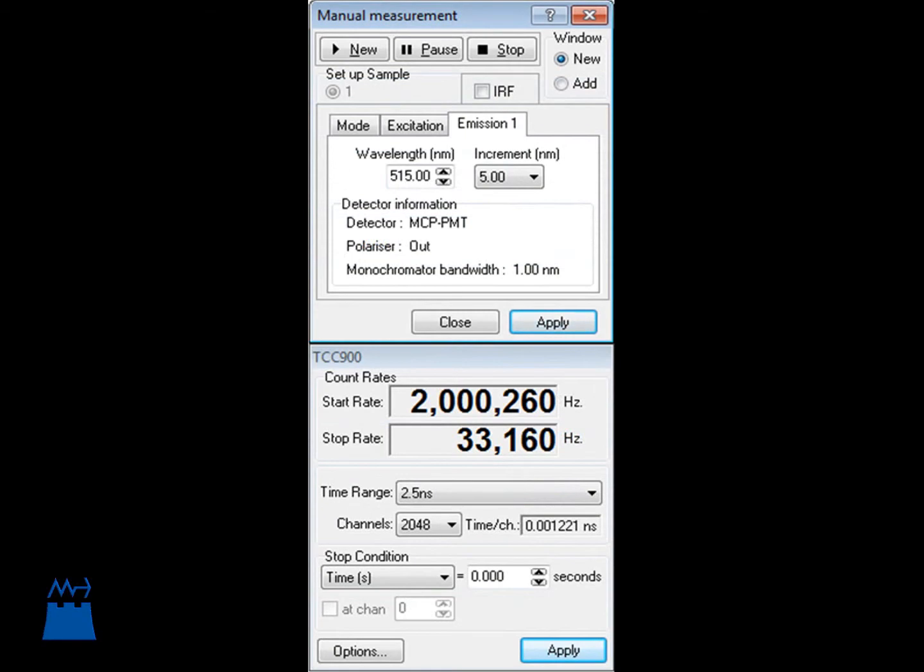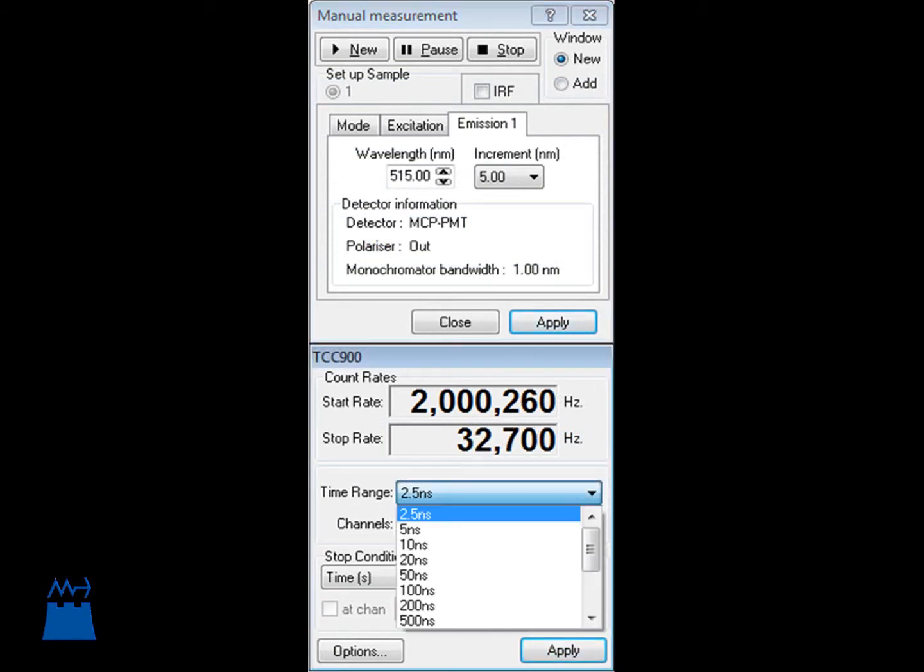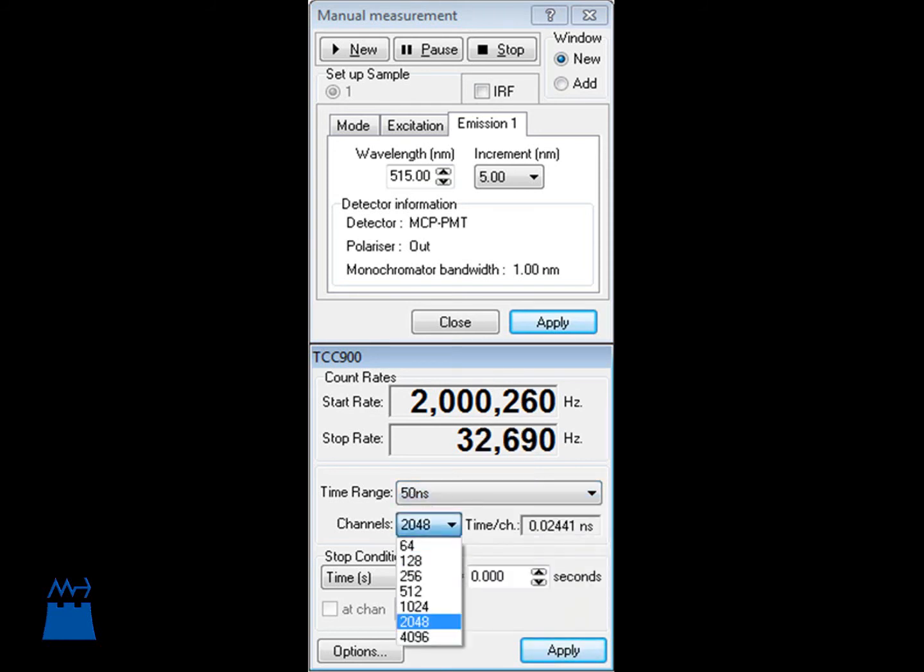And the lifetime measurement screen allows the user to choose the length of the time window, with options between 2.5 nanoseconds and 50 microseconds, the number of time bins within that window, with options up to 4,096, as well as the stop condition, such as time or peak counts.